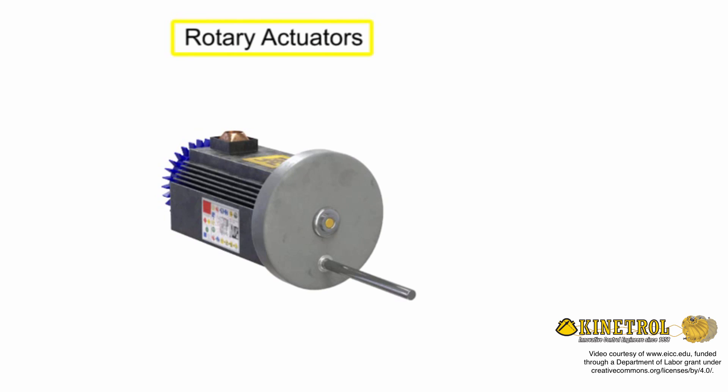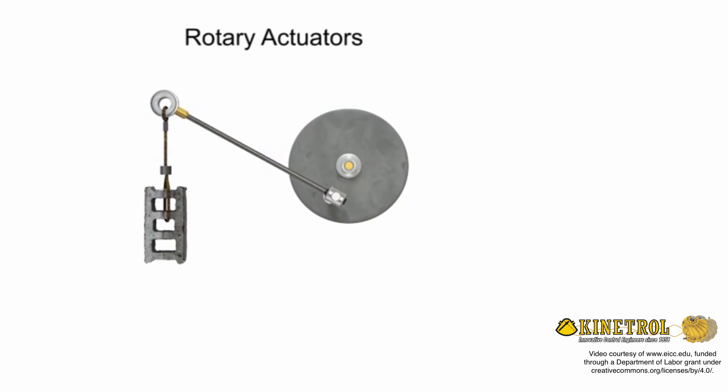A rotary actuator is an output device for a fluid power system that delivers an oscillating motion over a limited range of less than one full revolution of a circle. A true rotary actuator produces work by direct action of fluid pressure against internal vanes.